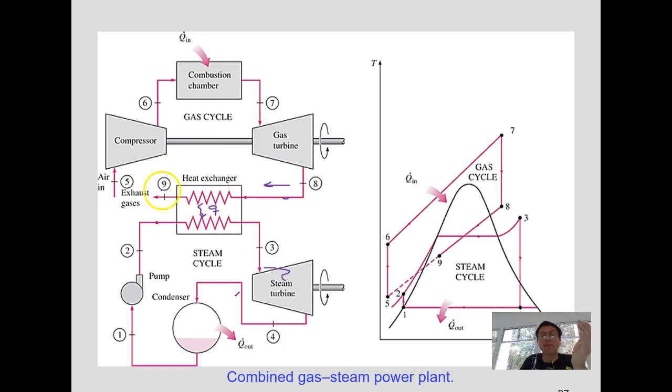So I don't need to have a boiler. I am using something that otherwise I will be just expelling. If I draw it in a T-S diagram, you can see that we only have one Q_in.